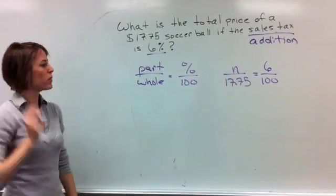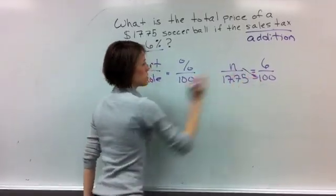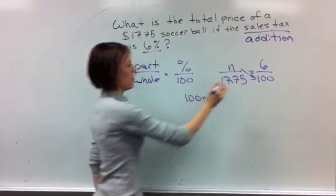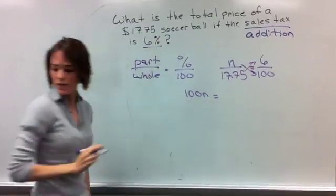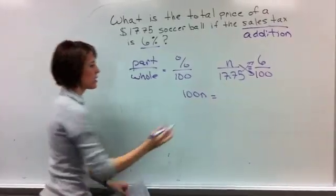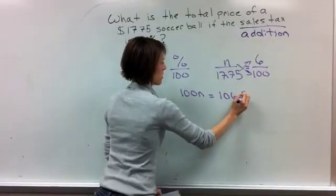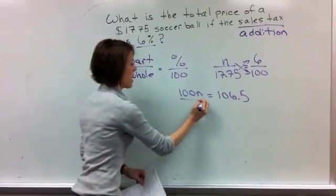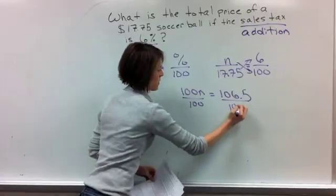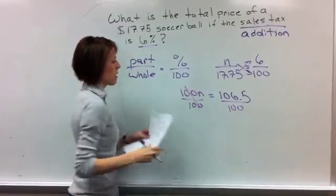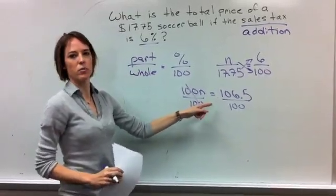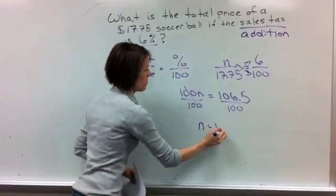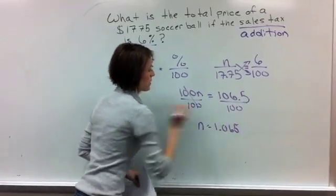So just like we did the last couple videos, you're going to do cross multiplication. So n times 100 is 100n, and then 17.75 times 6 is 106.5. And then from here, we're going to do our division, divide by 100. And we all know this is going to be 1. And when you divide a number by 100, remember, all you're going to do is move the decimal point over two times. So this would give us n equals 1.065.